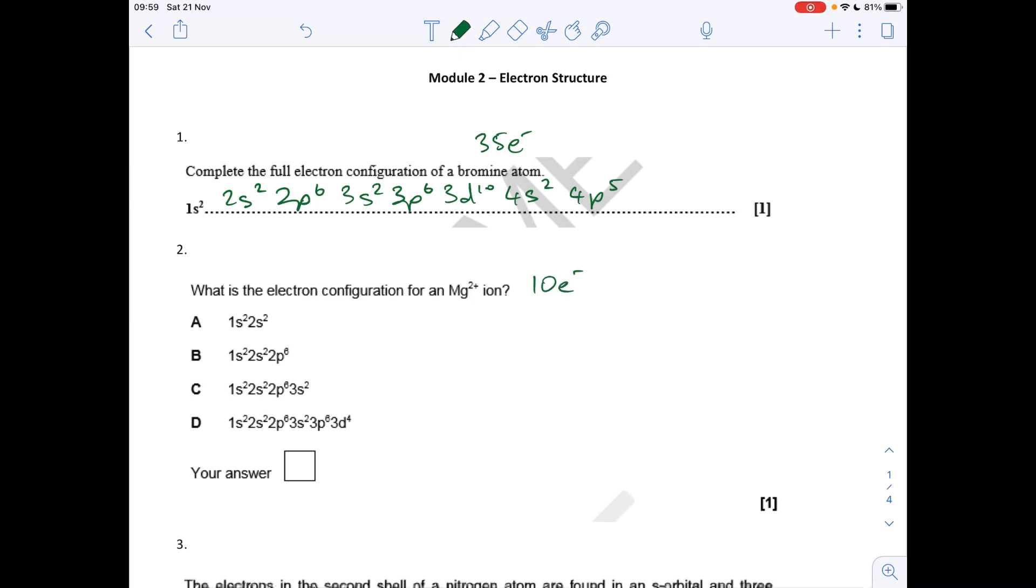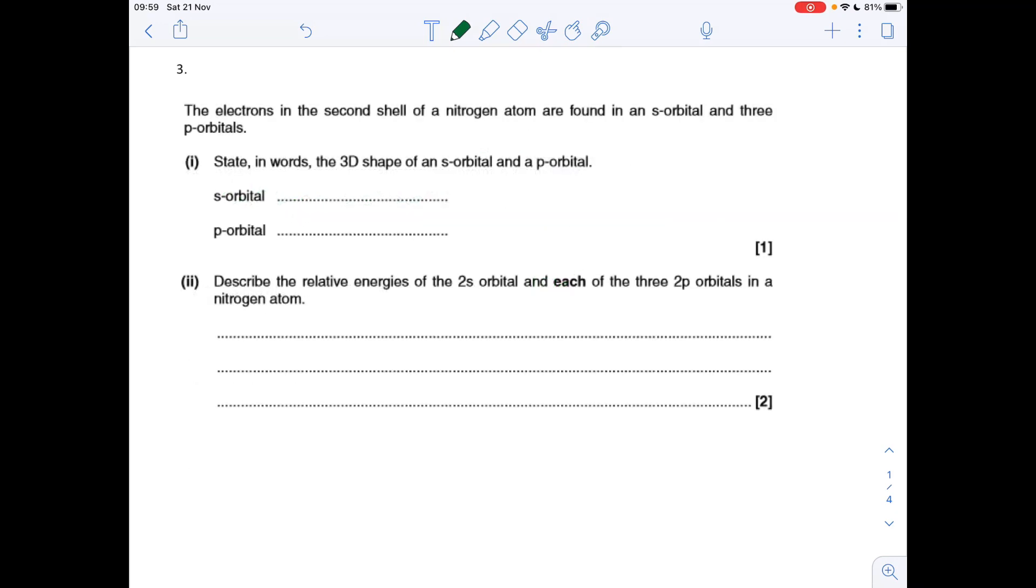Question three: stating where it's a 3D shape of an s orbital and a p orbital. Well, an s orbital is spherical, and the p orbital looks like that. You could either say lobe-shaped, but I tend to say dumbbell shape.